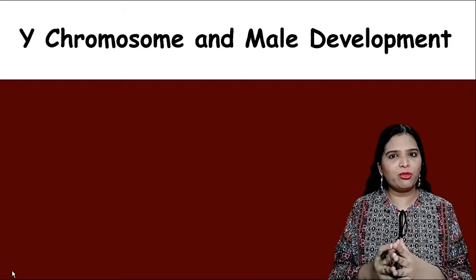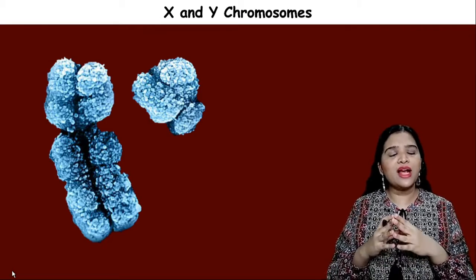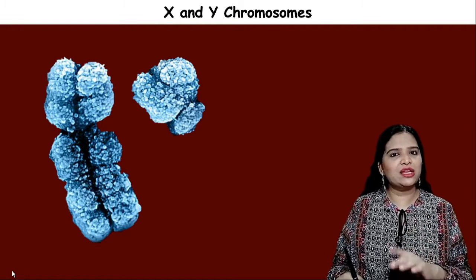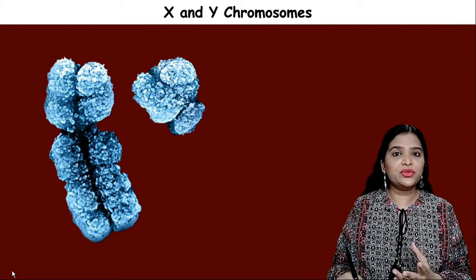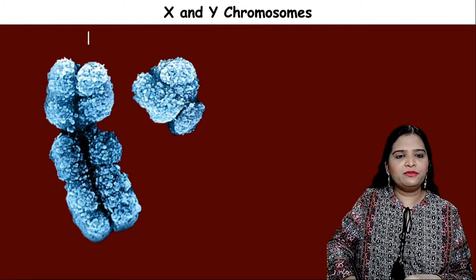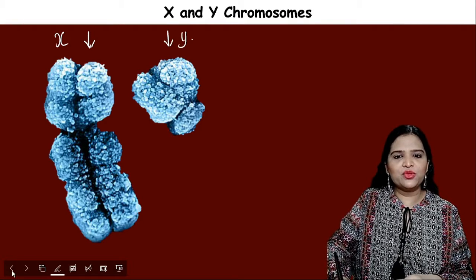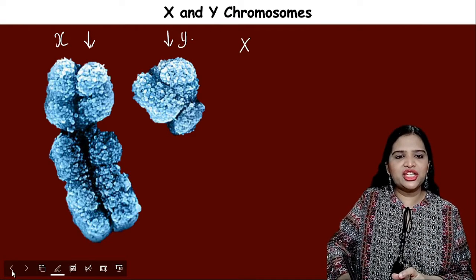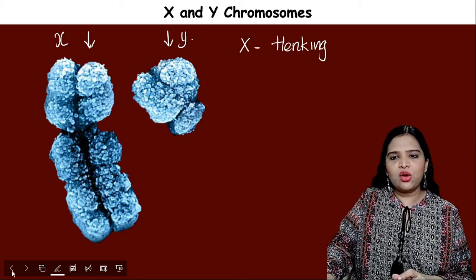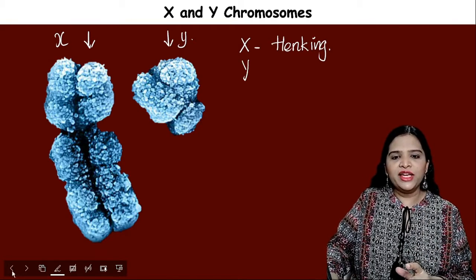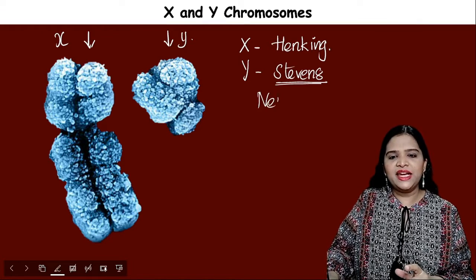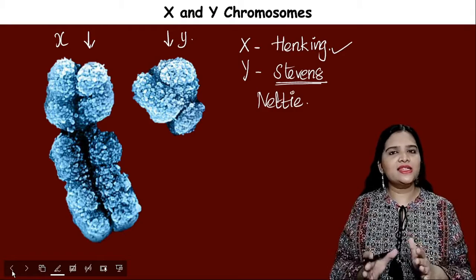Now let us move to the second part: the Y chromosome and how it leads to male development. We need to understand the differences between X and Y chromosomes. This is an electron microscopic picture of the X and Y chromosomes. The X chromosome looks like the shape of the letter X — that is why it was named so. X chromosome was discovered by Henking, and Y chromosome was discovered by Nettie Stevens.